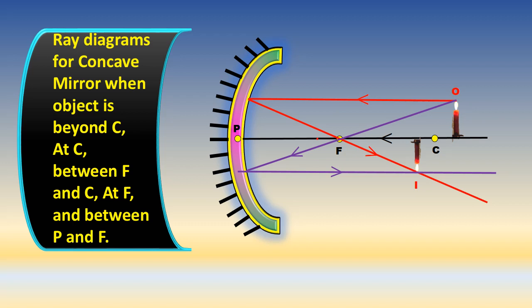Ray diagrams for a concave mirror when the object is beyond C, at C, between F and C, at F, and between P and F.